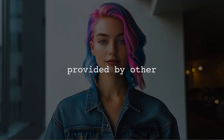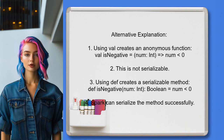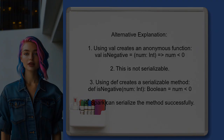Now let's look at the answers provided by other users. One user explains that the issue arises because defining a function using val creates an anonymous function, which is not serializable. They clarify that when you define a method using def, it becomes a member of an object that is serializable. Therefore, when Spark tries to serialize the method, it works, but it fails with the function.